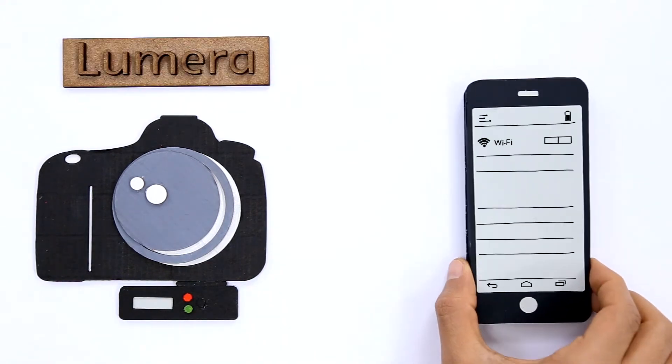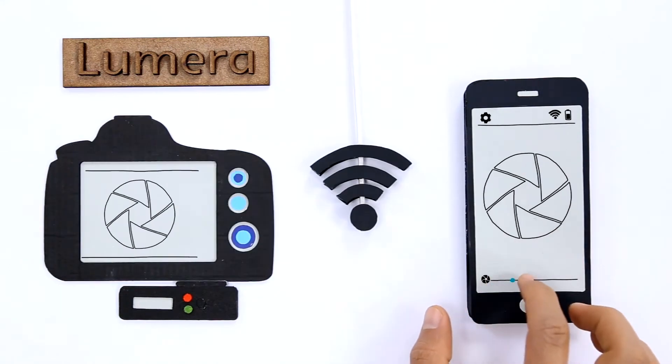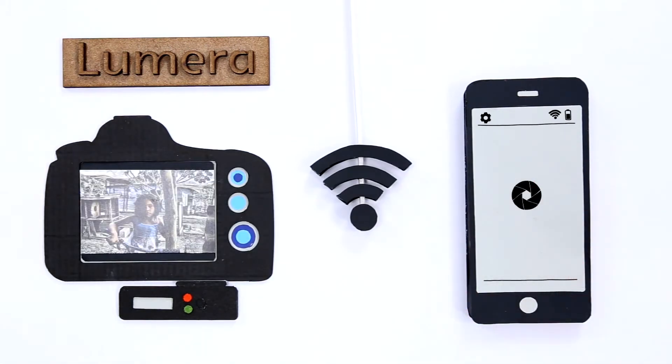With Lumira you can also wirelessly change camera parameters like aperture, focus and others, shoot photos and create amazing timelapses from your phone.